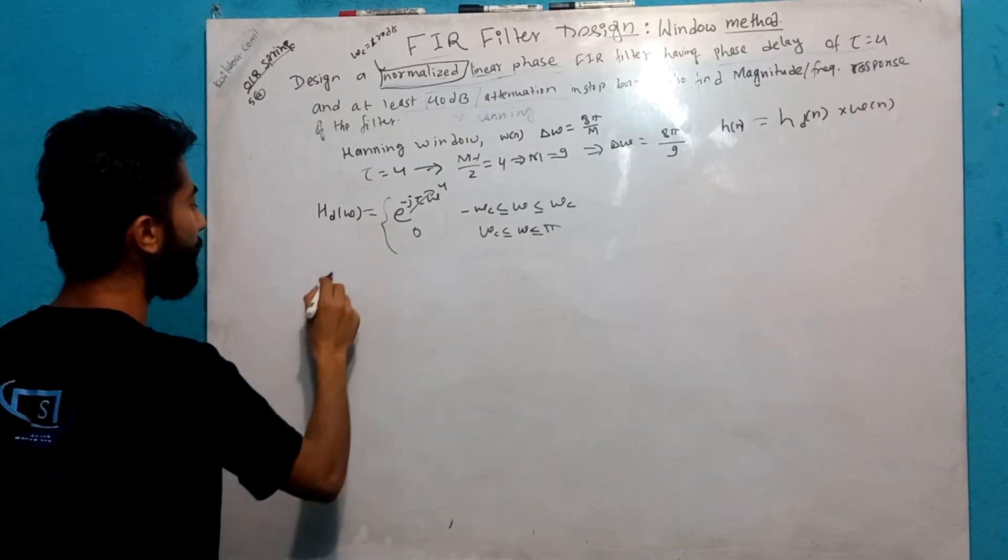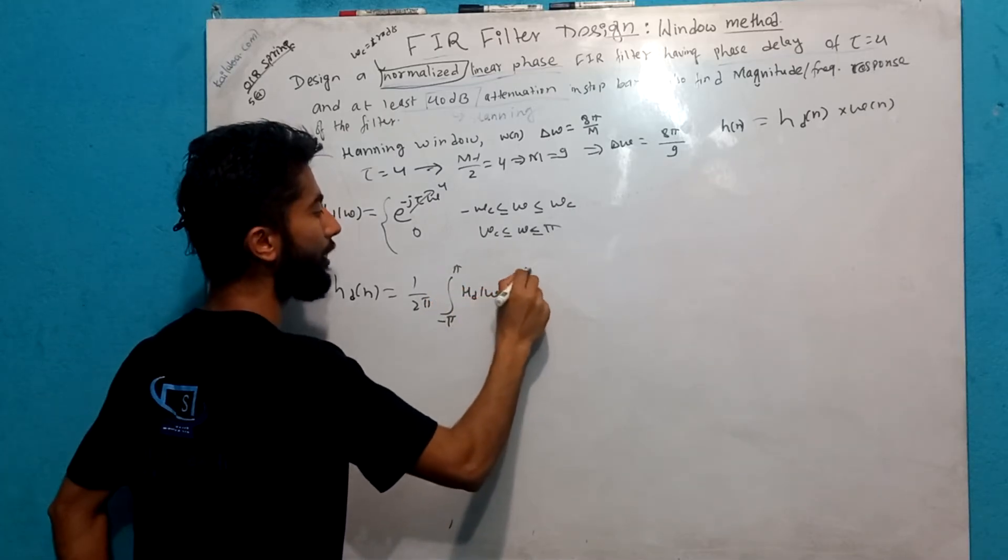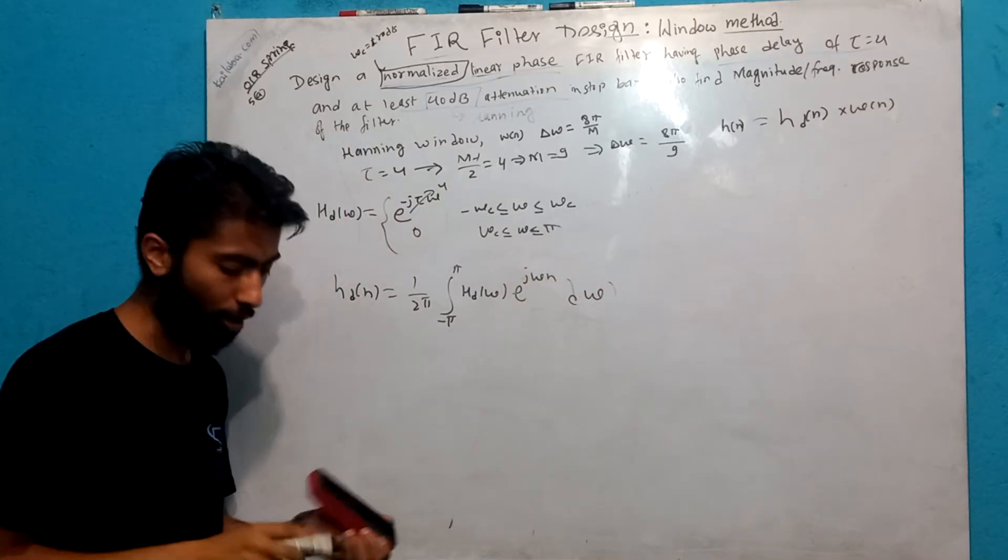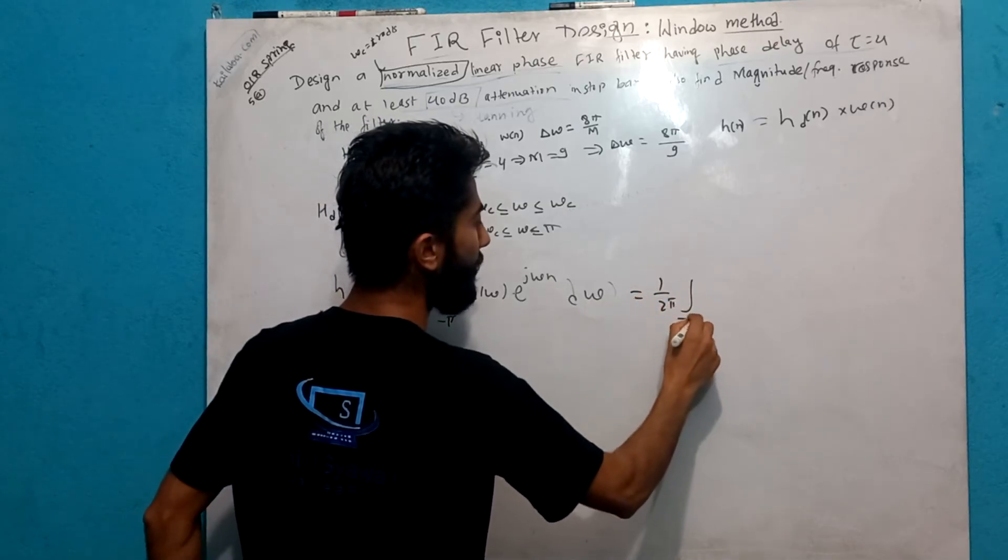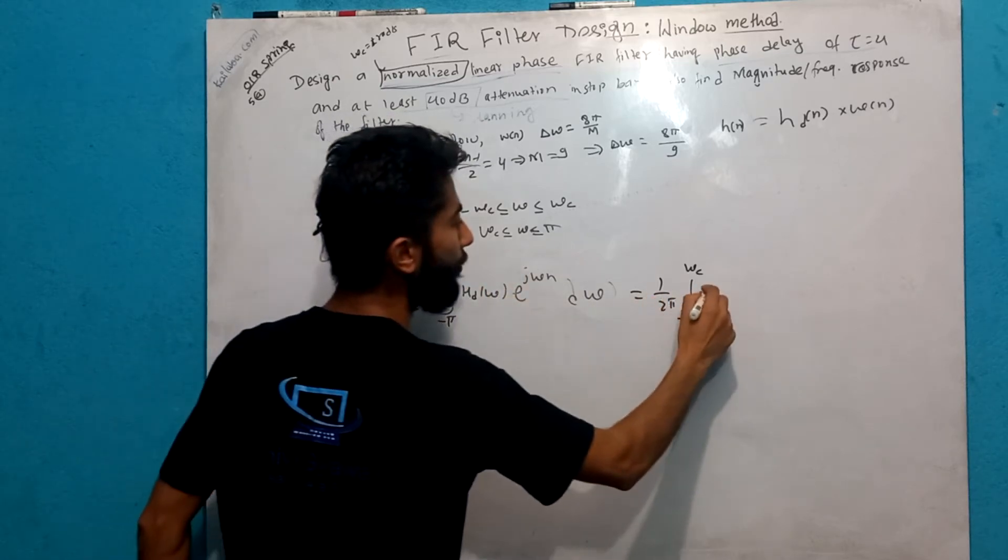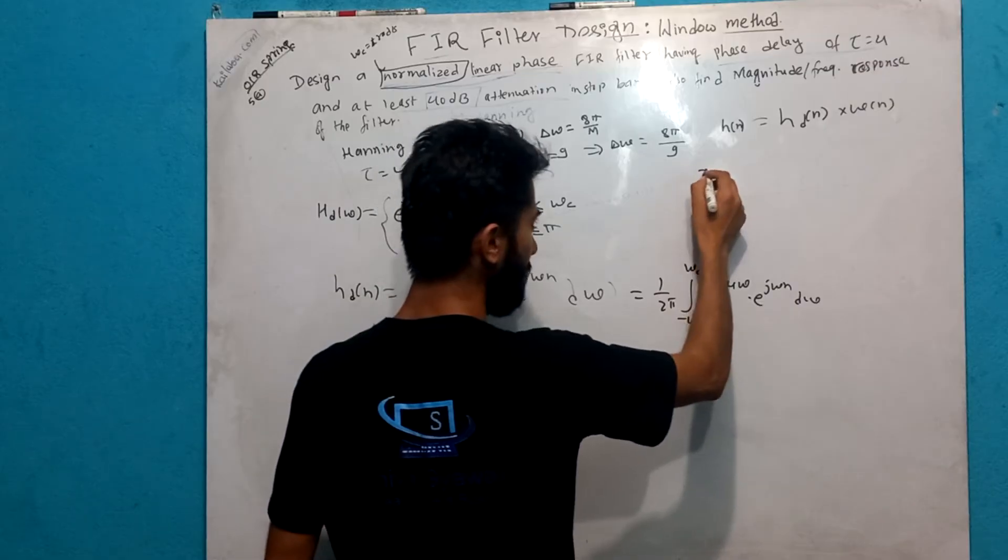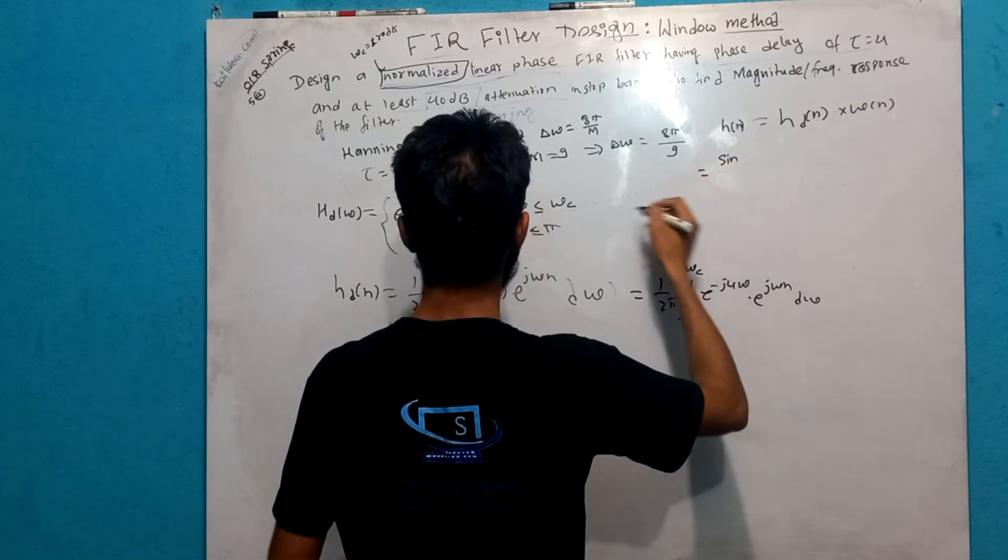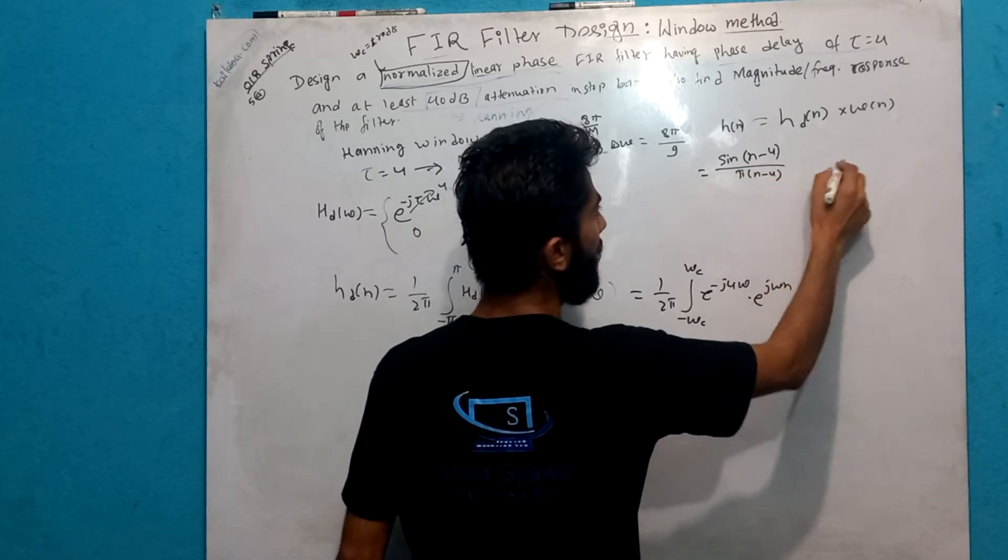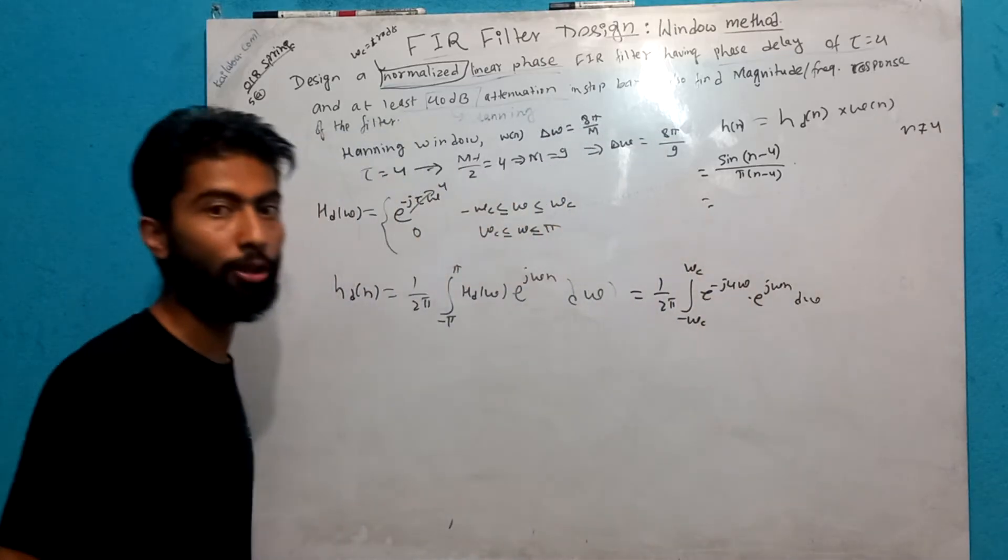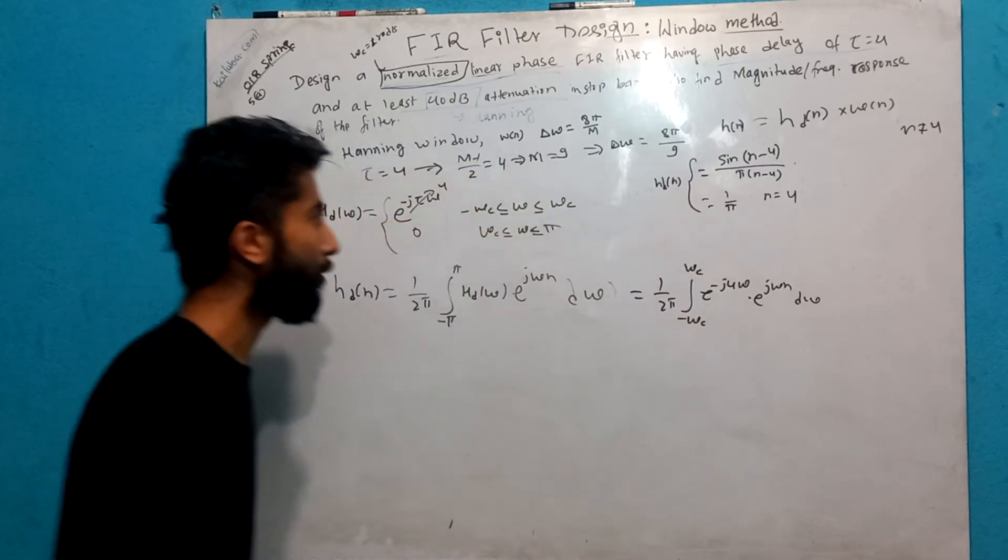If I will see omega d plus 4 minus 0 j omega, the range is going to be equal to tau like 4. Now I will tell you that 1 by 2 pi integral from minus pi to pi H of omega e to the power j omega n d omega. Sin omega c is going to be equal to 1. So sin omega c times n minus tau by pi times n minus 4.